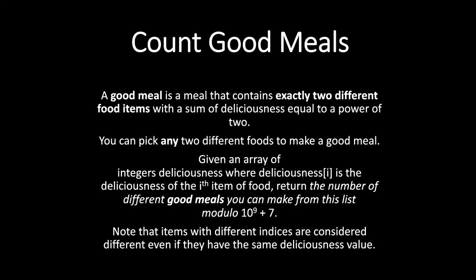Let's read the problem first. A good meal is a meal that contains exactly two different food items with a sum of deliciousness equal to a power of 2. You can pick any two different foods to make a good meal.